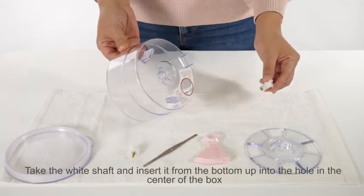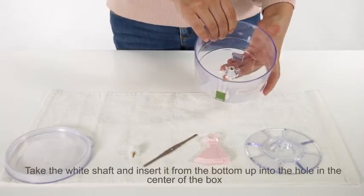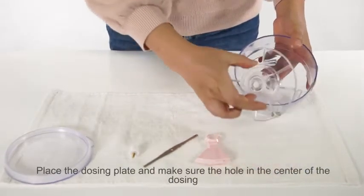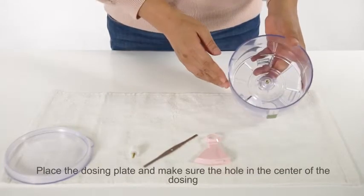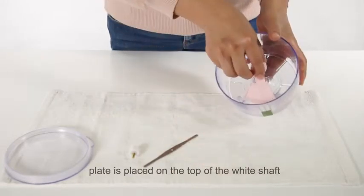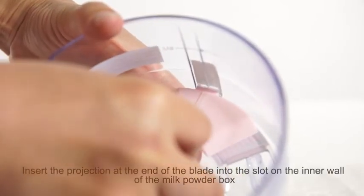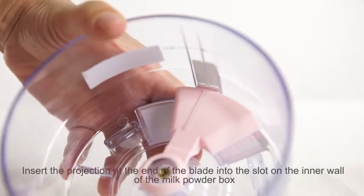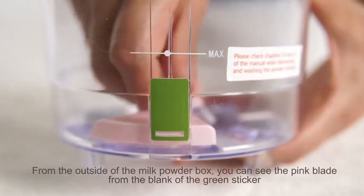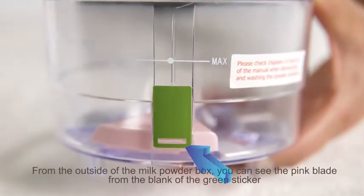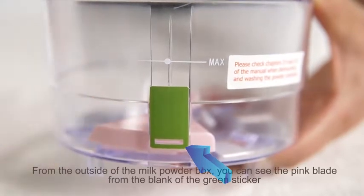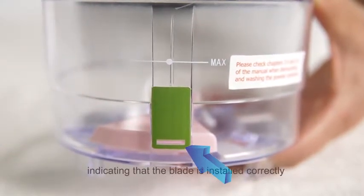Take the white shaft and insert it from the bottom up into the hole in the center of the box. Place the dosing plate and make sure the hole in the center of the dosing plate is placed on top of the white shaft. Insert the projection at the end of the blade into the slot on the inner wall of the milk powder box. From the outside of the milk powder box, you can see the pink blade from the blank of the green sticker, indicating that the blade is installed correctly.